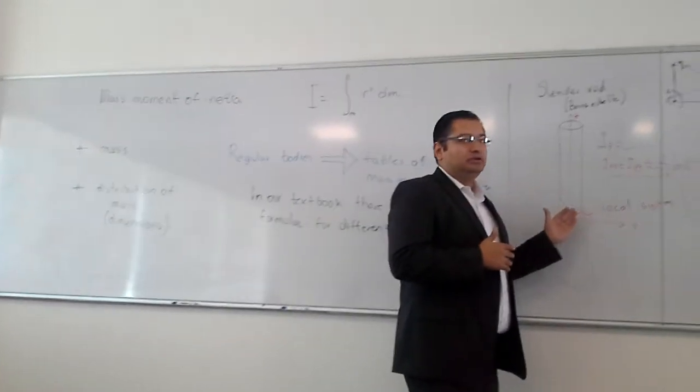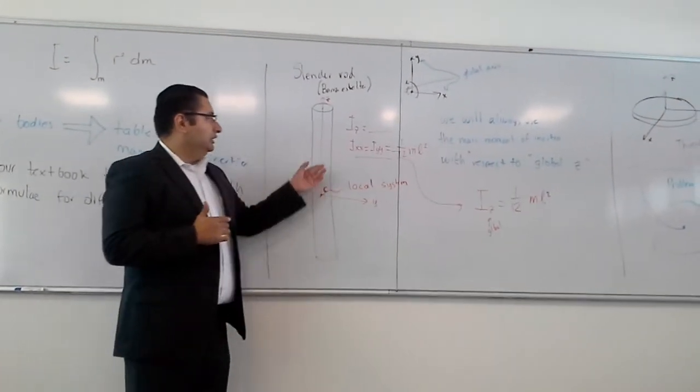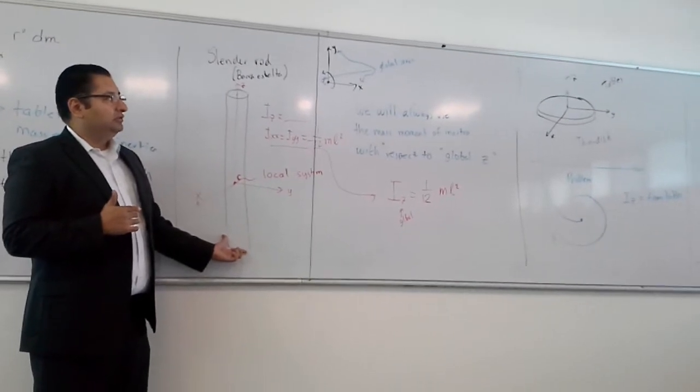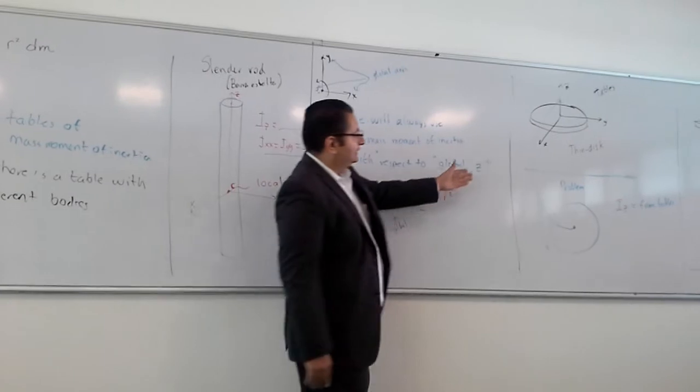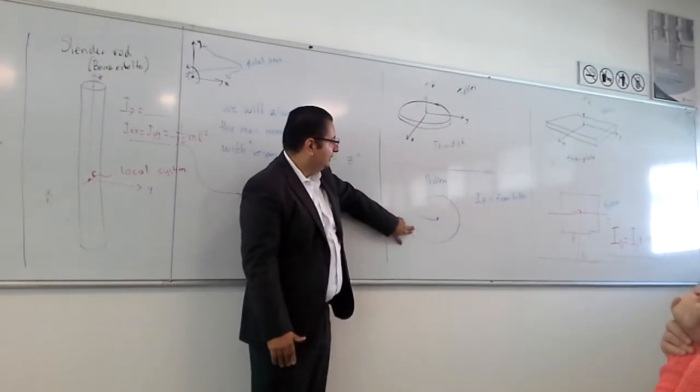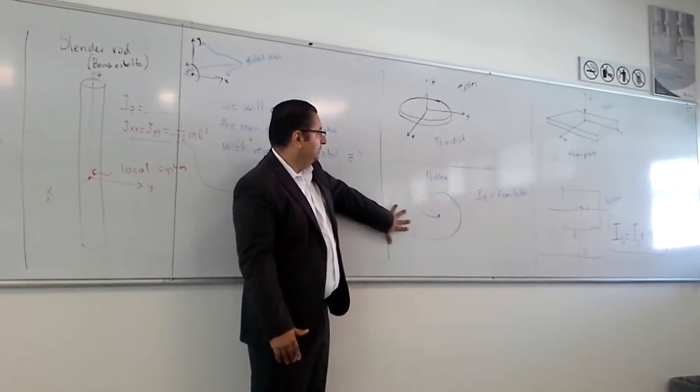But there's a thing with these tables: they have formulas for local axes of these rigid bodies. What you have to do is compare what axis you need in your problem. For instance, a disk placed on this plane.